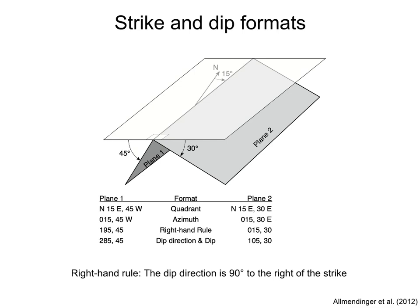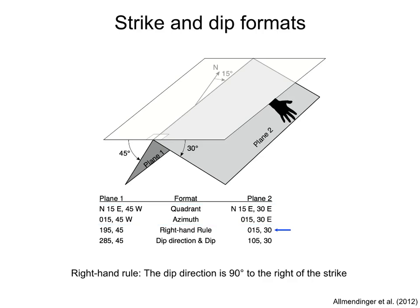There are several ways to report the strike and dip of these planes. The first two formats specify the dip direction: west for plane 1, and east for plane 2. The third format is called the right-hand rule convention and is the format we will use in the course. Imagine placing the palm of your right hand on the plane — the strike is given by the thumb, and the plane dips in the direction of the other fingers. Notice that with this convention, the dip direction is 90 degrees to the right of the strike. The fourth format is dip direction and dip — preferred by some structural geologists.